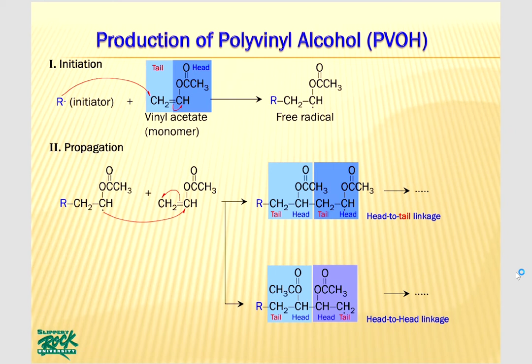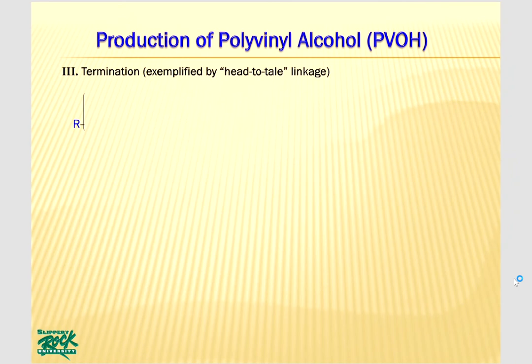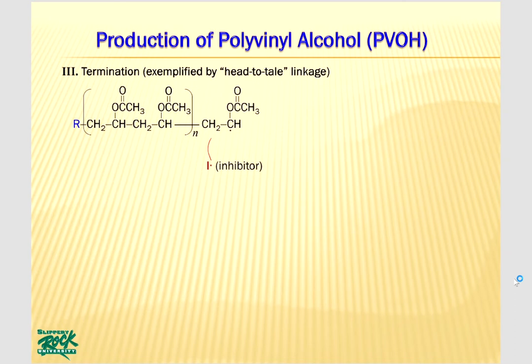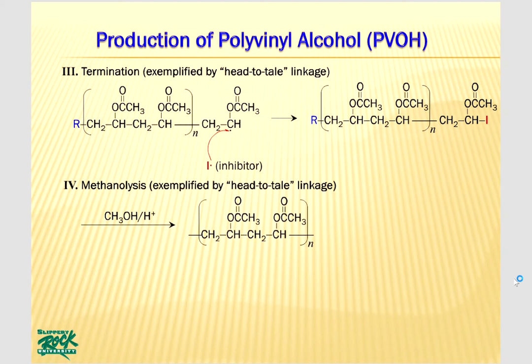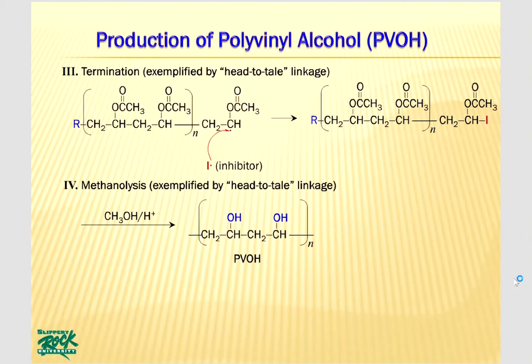Since a head-to-tail linkage is less sterically hindered, it would be formed more likely, while a head-to-head linkage would be formed less likely. Polymerization process will be terminated by an inhibitor. The single electron of the inhibitor radical would be paired favorably with an electron of the polymeric free radical. The following methanolysis replaces acetate groups with hydroxyl groups to produce polyvinyl alcohol. The polyvinyl alcohol has mostly head-to-tail normal linkages with a few head-to-head abnormal linkages, depending on the conditions for the polymerization of the vinyl acetate precursor.